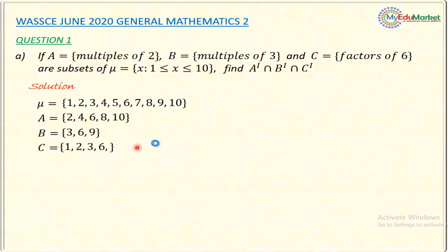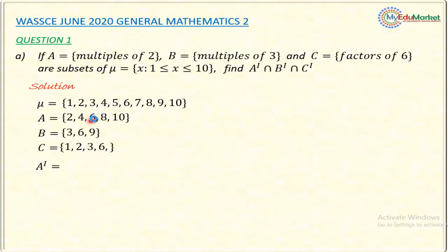With all sets identified, we can now continue. The question asks for A complement intersect B prime intersect C prime, so we need to find A prime, B prime, and C prime first. A complement contains elements in the universal set but not in set A: {1, 3, 5, 7, 9}.